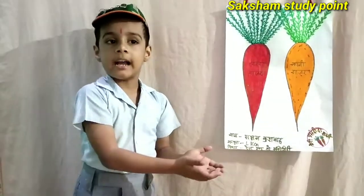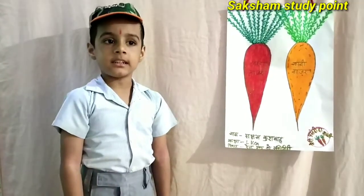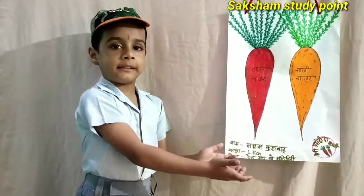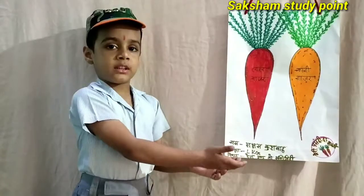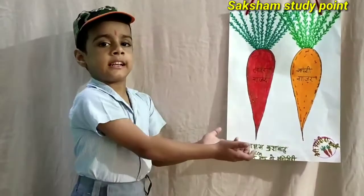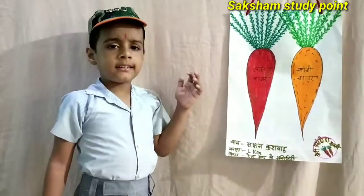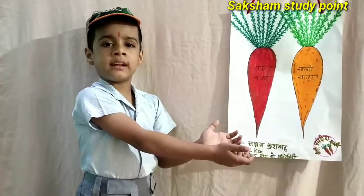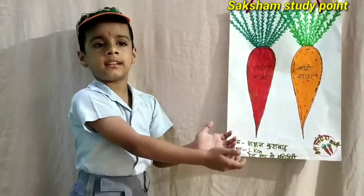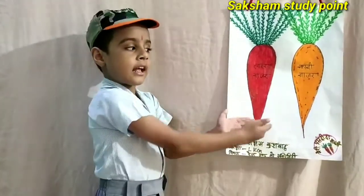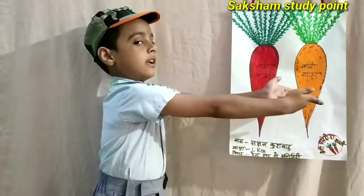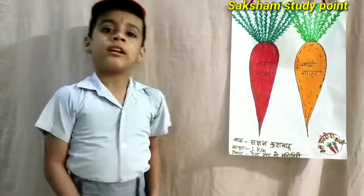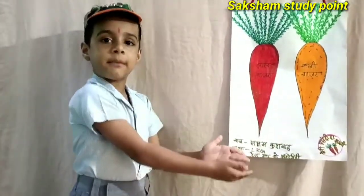My favorite vegetable is carrot. It is good for eyes. It is used in my dish. It is red and orange. It is a sweet and healthy vegetable.